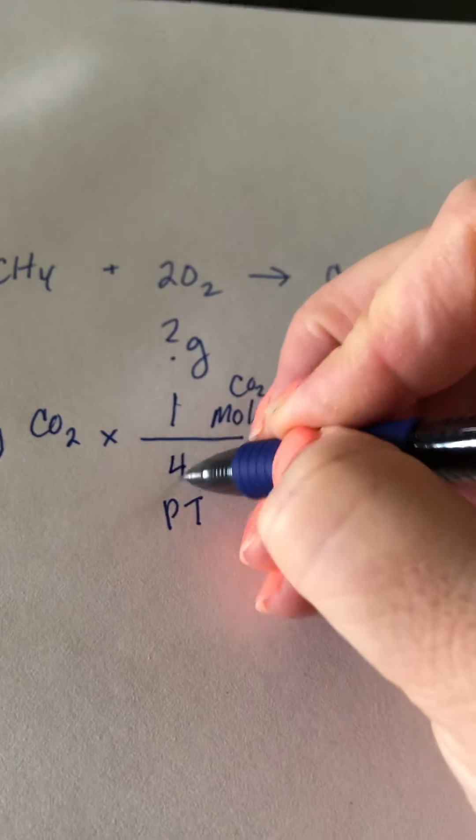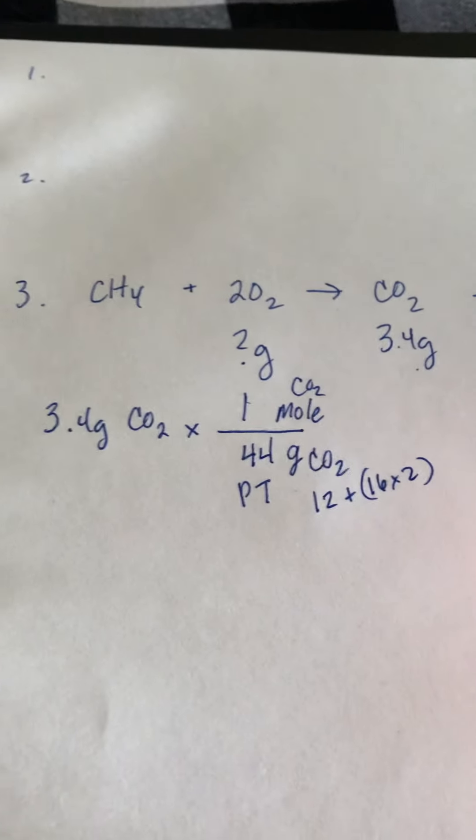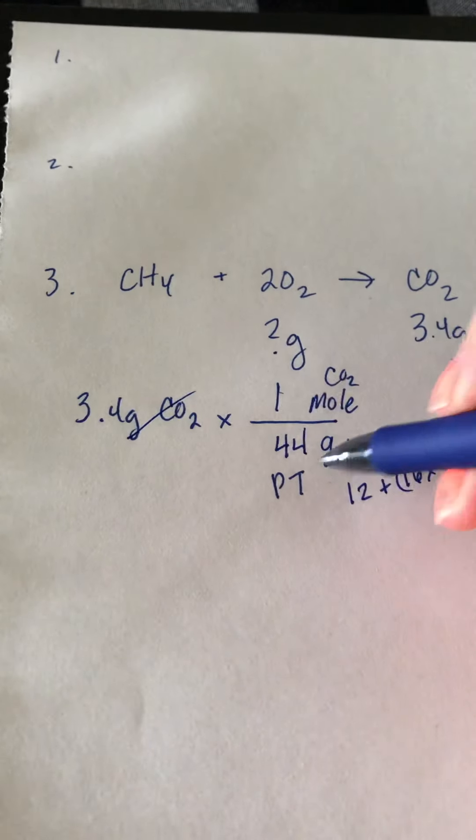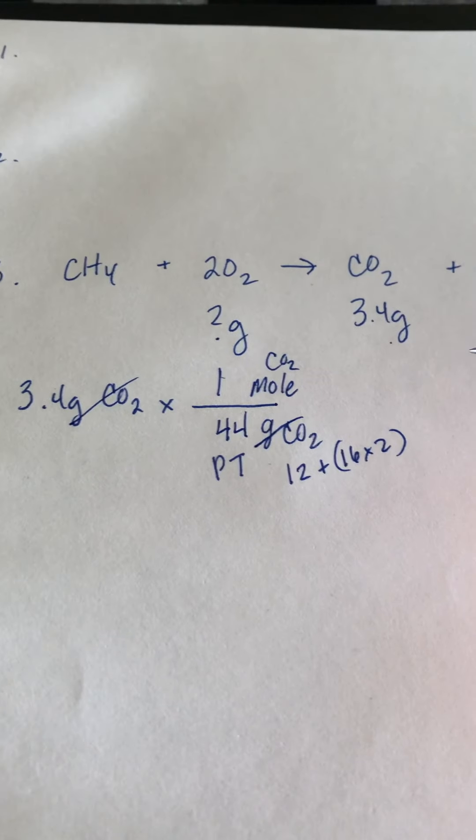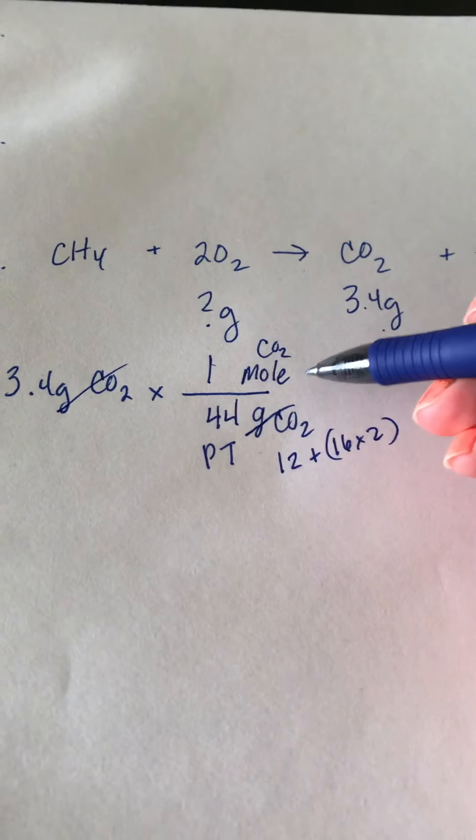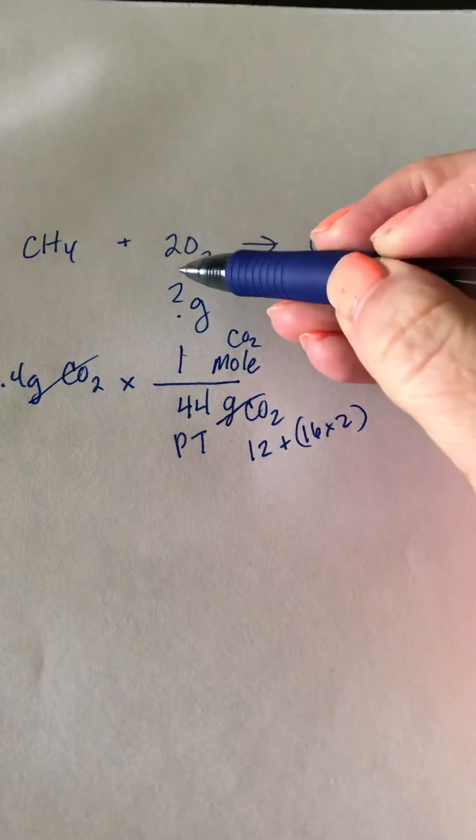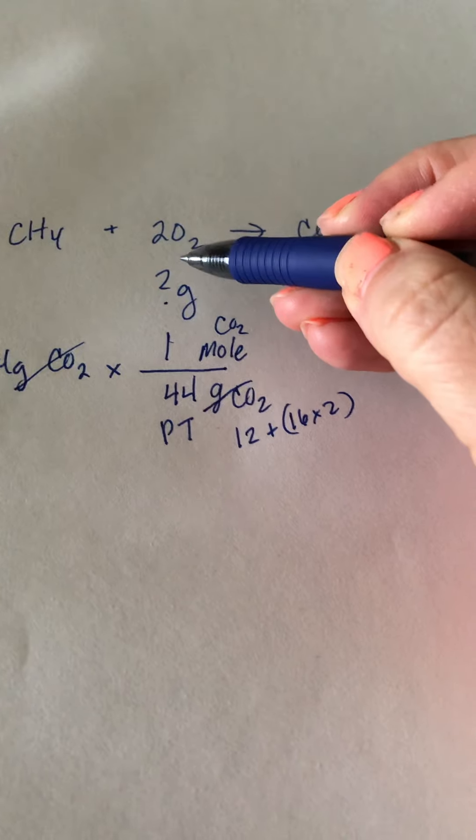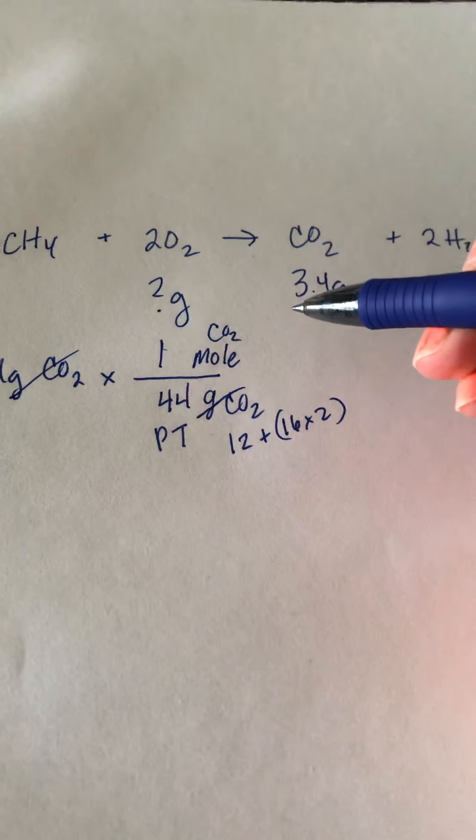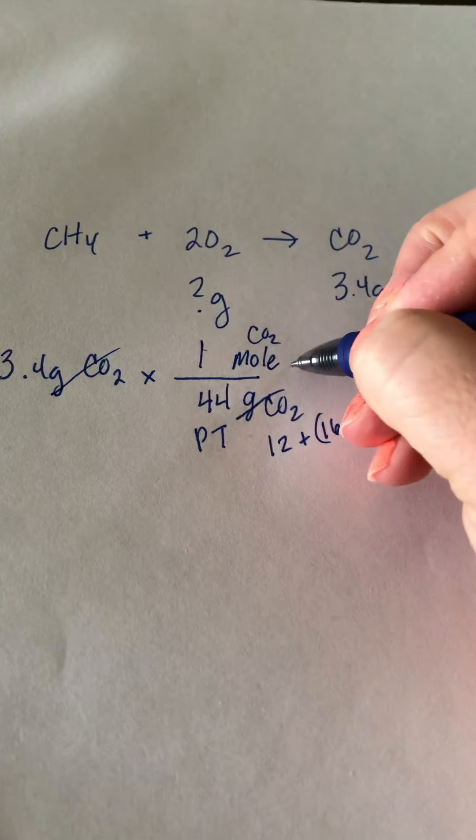Plus 12 is 44, so that's the molar mass of carbon dioxide. So that cancels out carbon dioxide grams of carbon dioxide. Now we have moles of carbon dioxide. That's what we want in order to go from one compound to another. We're trying to get how much we have oxygen.